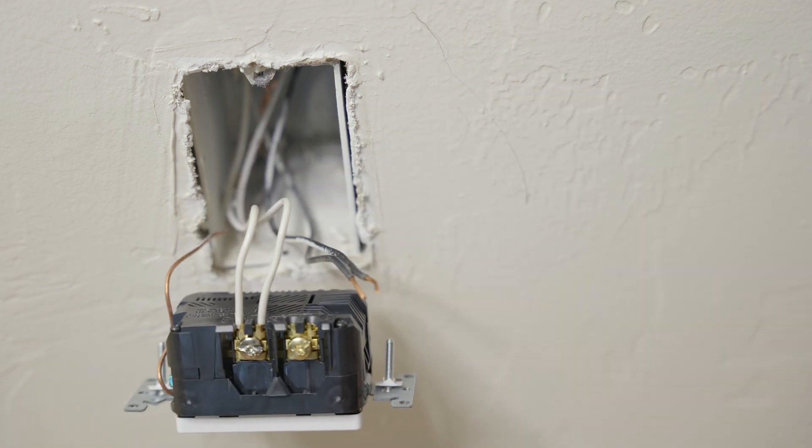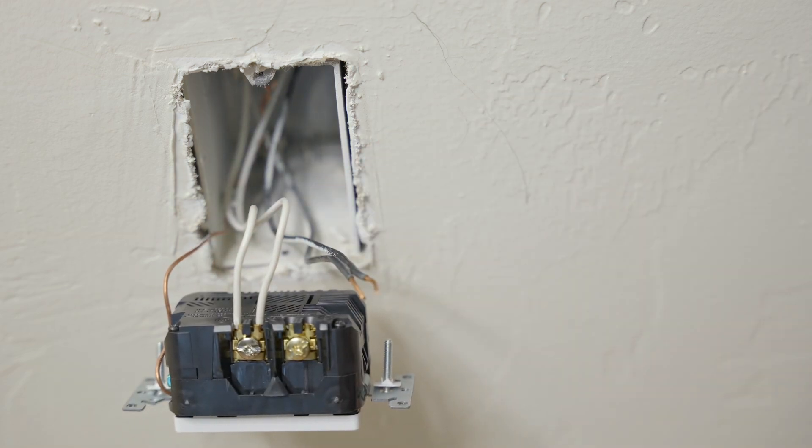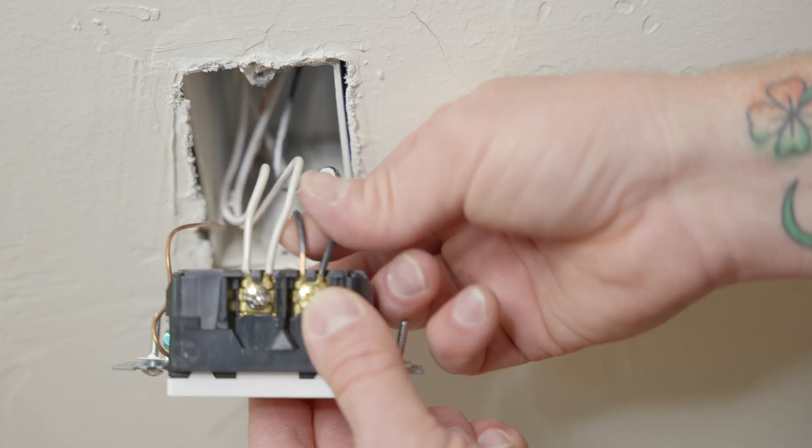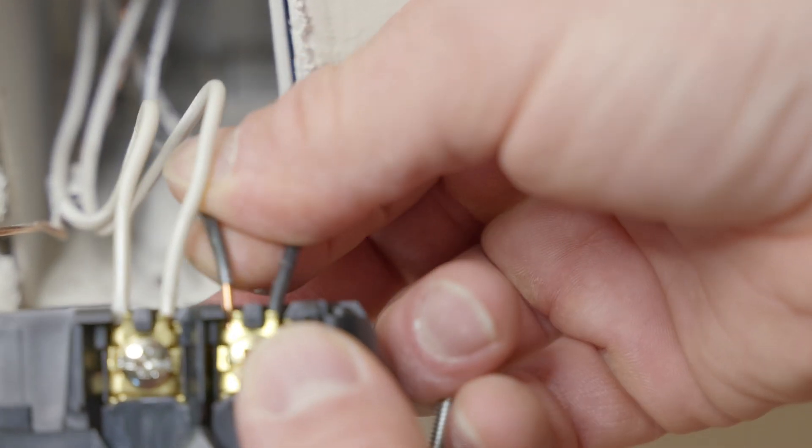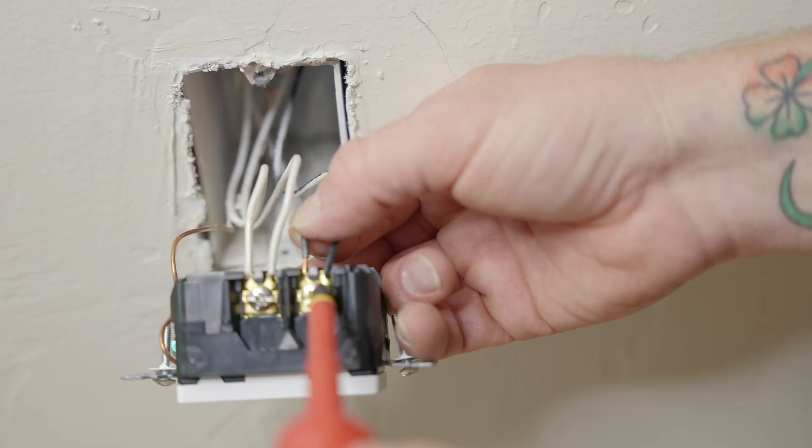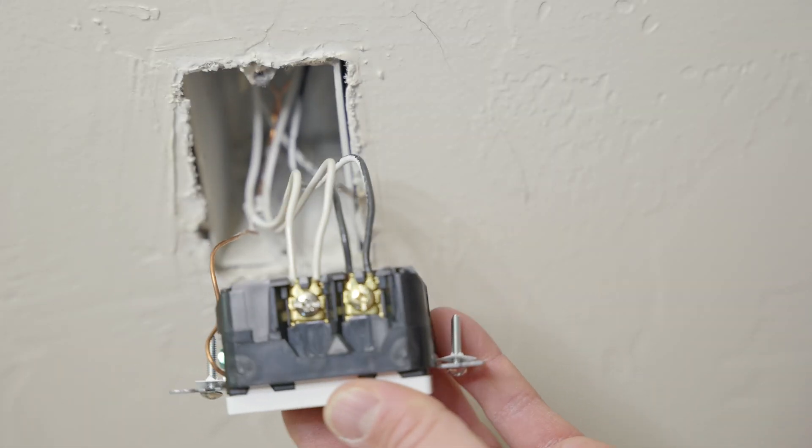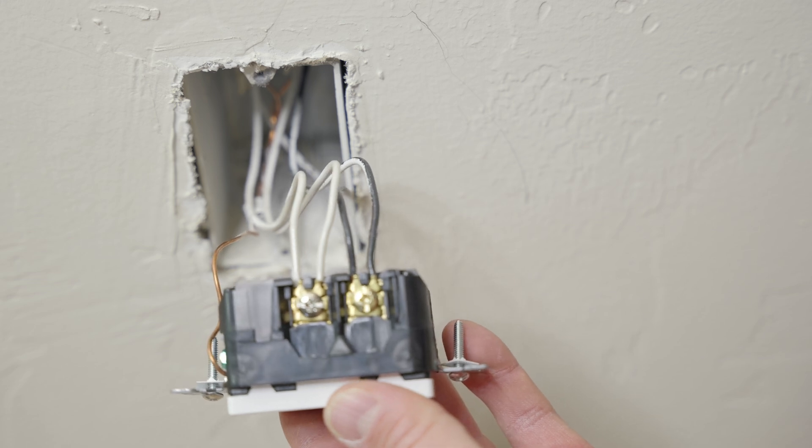Now our white neutrals are installed. It's time to install the black. The two hot wires look in the same way. Going to be right behind in between the two plates. It's as easy as that to swap out your regular old outlet into a USB.